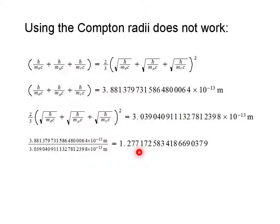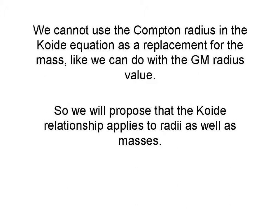We cannot use the Compton radius in the Koide equation as a replacement for mass, like we can do with the geometric mean radius value. So we will propose that the Koide relationship applies to radii as well as masses.